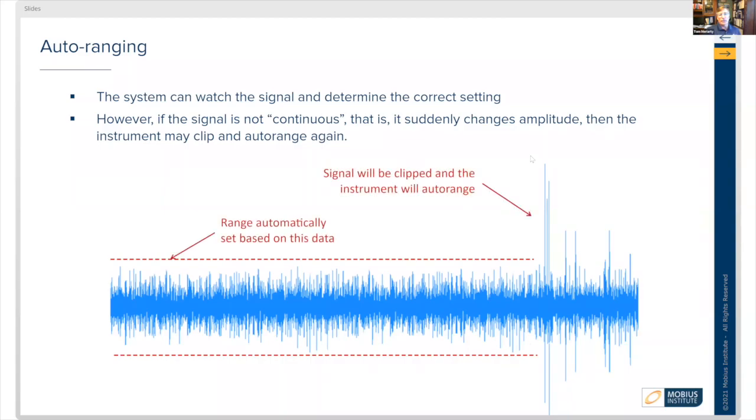There's auto-ranging, which can help. The system can watch the signal and determine the correct setting. However, if the signal is not continuous—if there are sudden changes to the amplitude—the instrument may clip and then auto-range again.